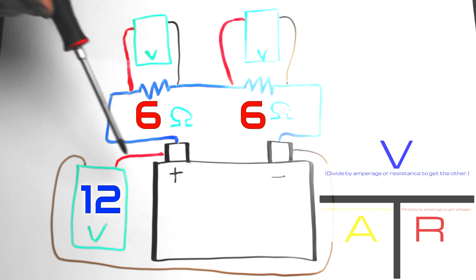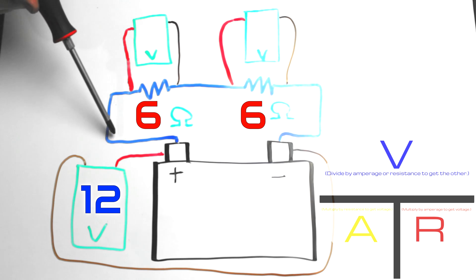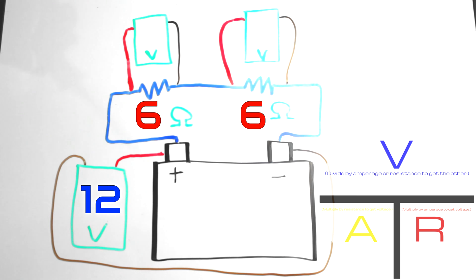So what if we left our common lead where it is connected to this negative battery post and took our red lead and measured right here in the circuit. Well from here to here there are no loads. No voltage has been used up to get from here to here. There's still the 12 volts right here.